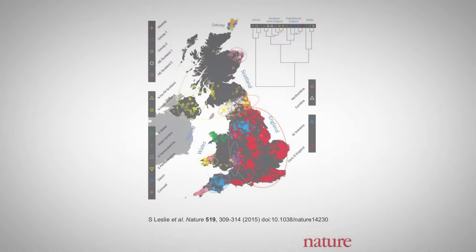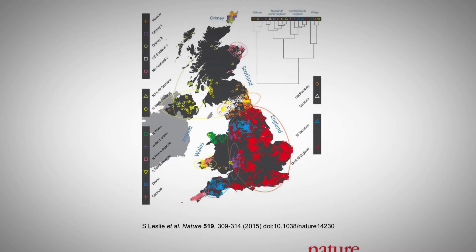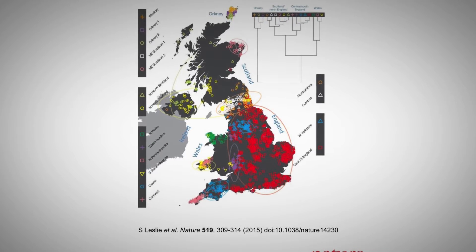A key focus of my group's research over the past several years has been the development of approaches to analyse genetic data, and in particular to identify fine-scale geographic differences that exist between people from different parts of the world. A key issue is that those differences are very subtle, so in our approach we find segments of DNA that are shared between individuals and use computationally intensive approaches to cluster those individuals that share lots of pieces of DNA — the idea being that if you share a piece of DNA with people, you share lots of ancestry with them.